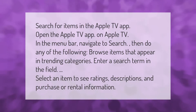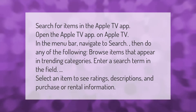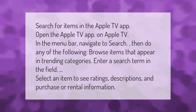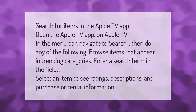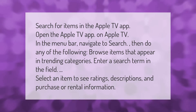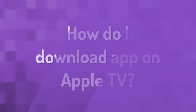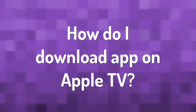To search for items in the Apple TV app, open the Apple TV app on Apple TV. In the menu bar, navigate to Search, then do any of the following: browse items that appear in trending categories, enter a search term in the field, or select an item to see ratings, descriptions, and purchase or rental information.